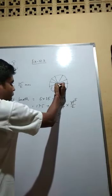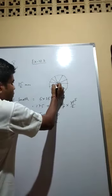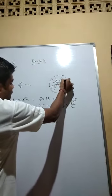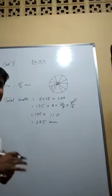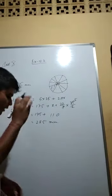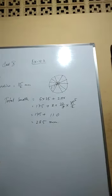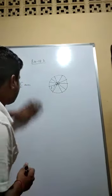See, this full angle is 360. Now how many sectors are there? 1, 2, 3, 4, 5, 6, 7, 8, 9, 10. So this 360 divided by 10, that is the angle of each sector, no?